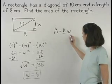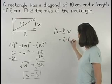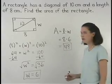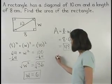which is the length times the width, or 8 times 6, which is 48. So the area of the rectangle is 48 square centimeters.